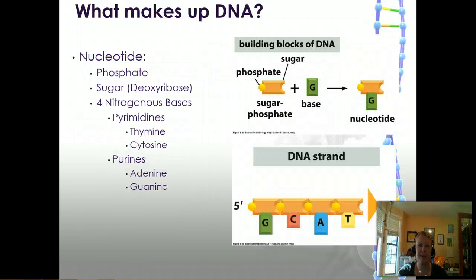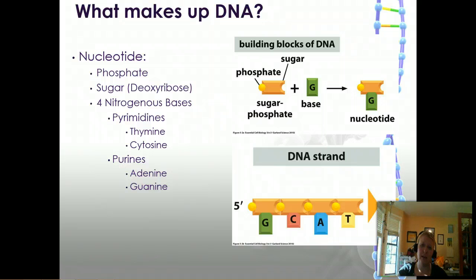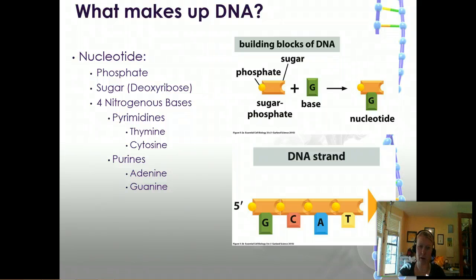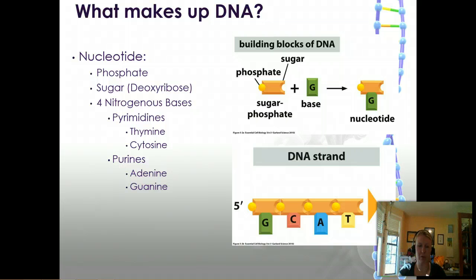So let's talk about what makes up DNA. The monomer of DNA is the nucleotide — the most basic building block — which contains a phosphate, a sugar, and one of four nitrogenous bases. The term nucleoside refers to the sugar and base lacking the phosphate. The four bases fall into two groups: pyrimidines and purines. The pyrimidines are thymine and cytosine; the purines are adenine and guanine. They always pair one pyrimidine to one purine, which we'll look at on the next slide.